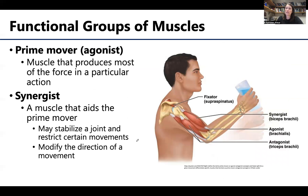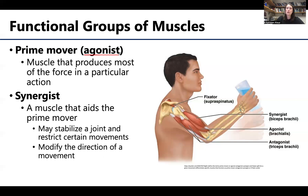Let's talk about the functional groups of muscles. There are really four categories of types of actions at a given time — a lot is typically happening at once. We'll start with the prime mover, also referred to as the agonist. The prime mover is the muscle that produces most of the force during a contraction. For each action at a joint, there are typically more than one muscle contracting, but there's generally just one prime mover, which will have the most powerful concentric contractions to allow that movement to occur.